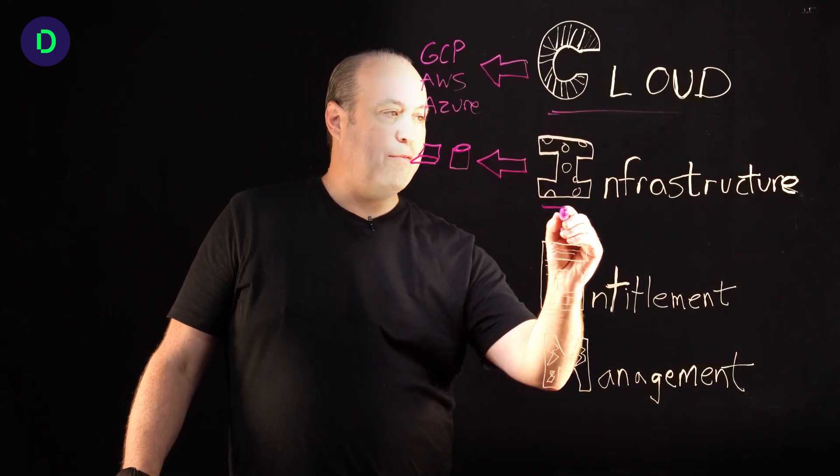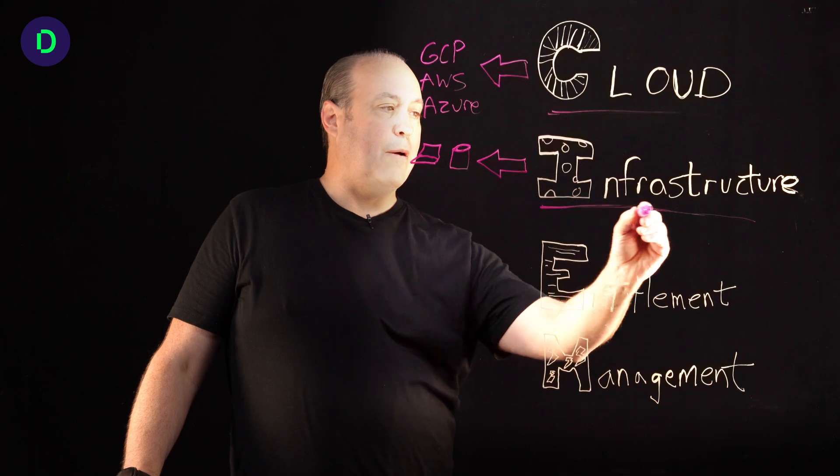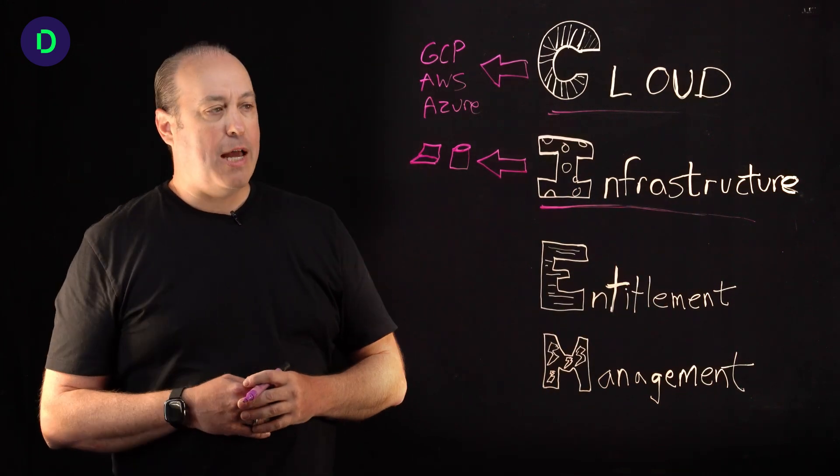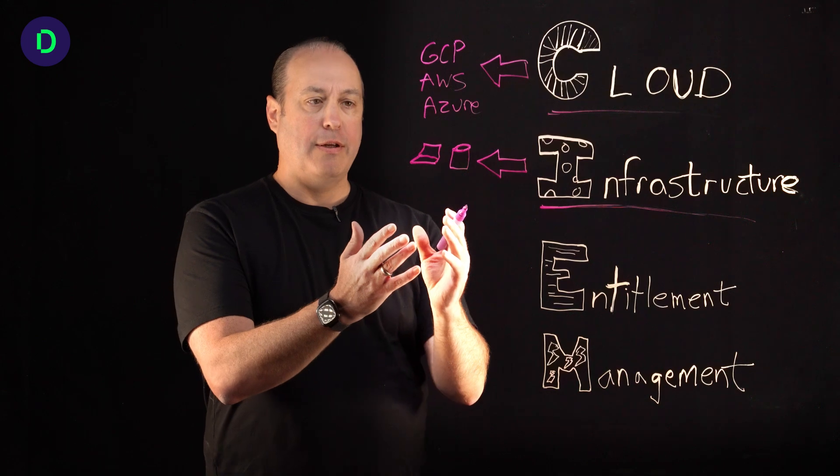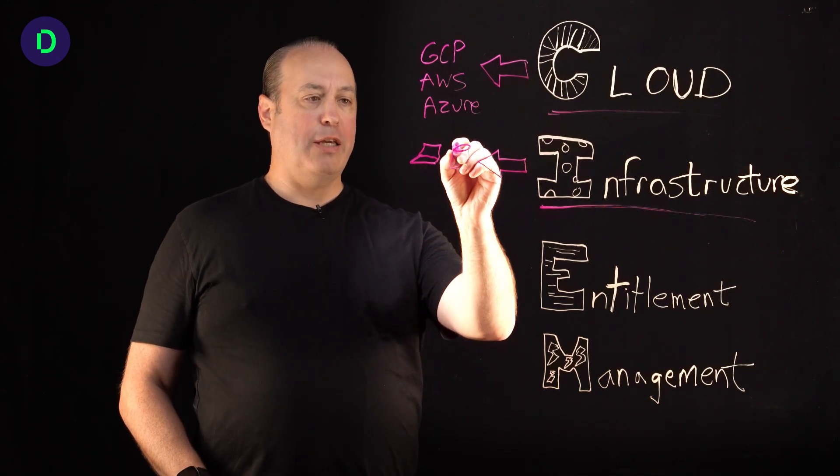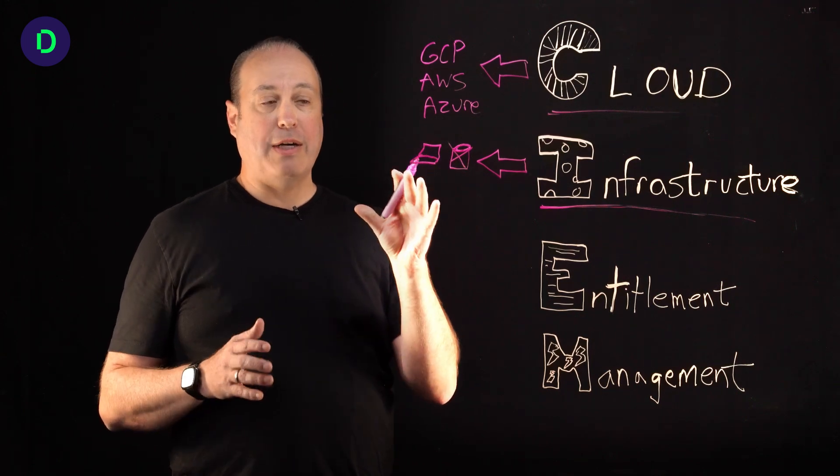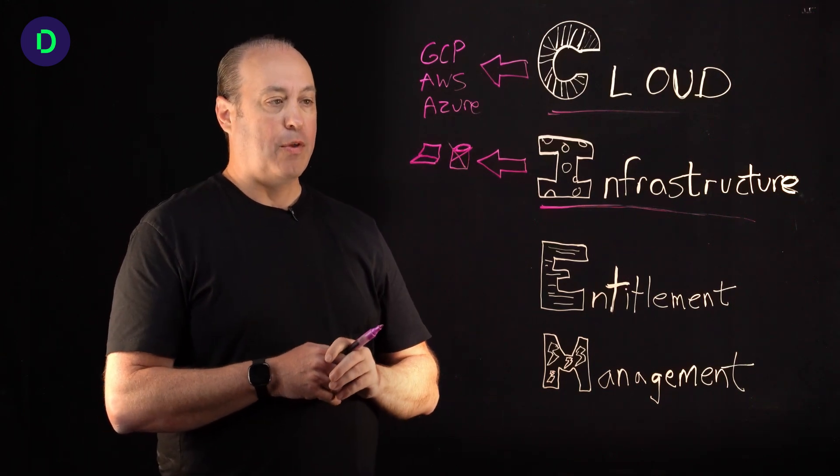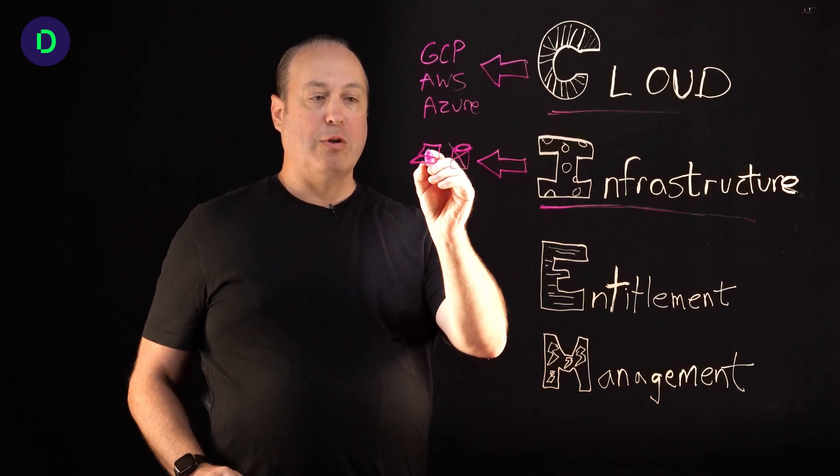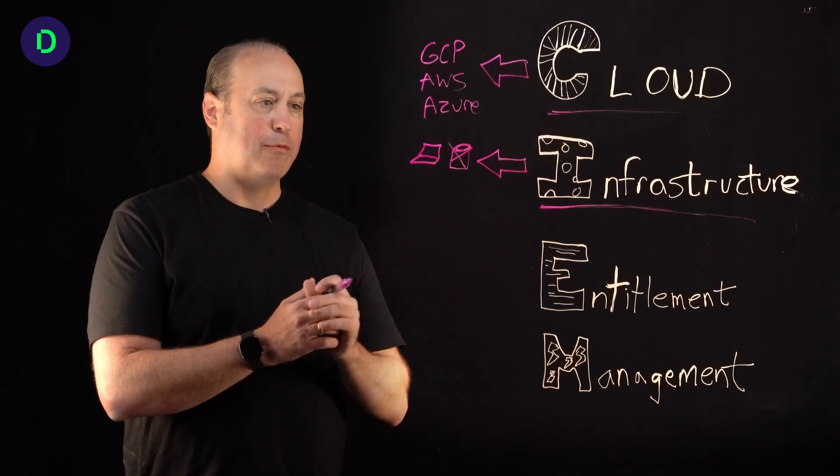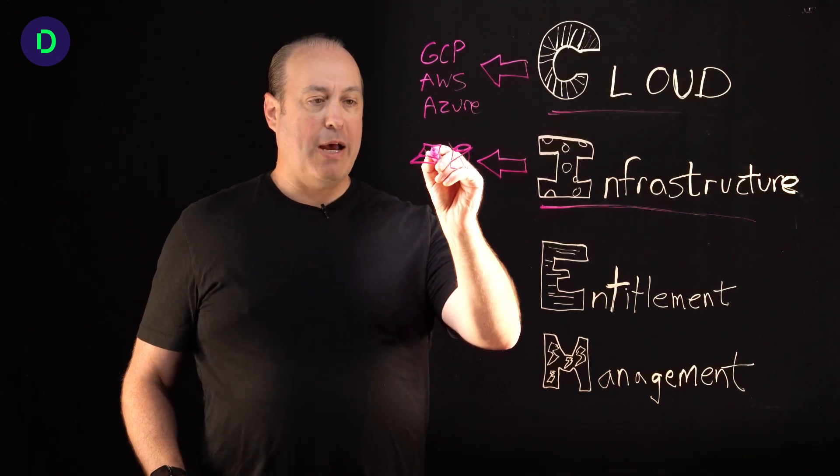That's what is meant by infrastructure in CIEM: the access to these really critical things that if they were compromised, somebody were able to hack your database, for example, they would get access, potentially read-write access to some very sensitive information. Or they were able to compromise a virtual server and get access to your DevOps environment, your development platform. That's a really bad situation.